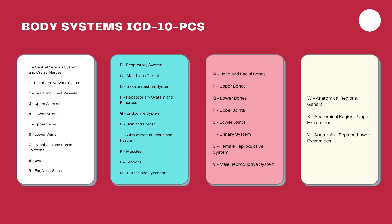Similarly, you have W, X, and Y as body system values. W is used when a procedure is generally performed on a body cavity rather than a specific body part, such as the pleural cavity. X and Y — anatomic regions, upper extremities and lower extremities — are used for procedures like amputations, where you cannot specifically point to one body system or body part.